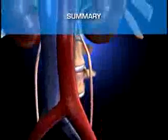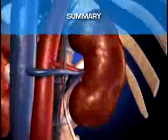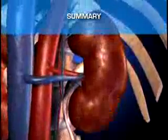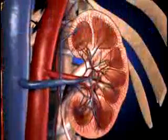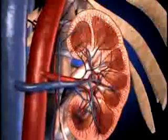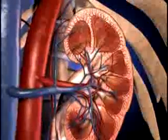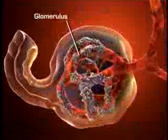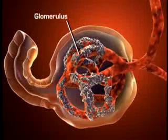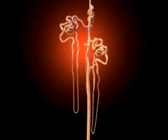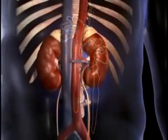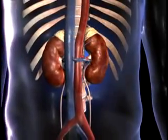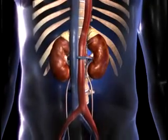The kidneys perform an excretory function by filtering the blood and then selectively reabsorbing those materials needed to maintain a stable internal environment. The nephron is the functional unit of the kidney, composed of a glomerulus, which filters the blood, and a tubular component, where necessary substances are reabsorbed into the bloodstream and unneeded materials are secreted into the tubular filtrate for elimination in urine.